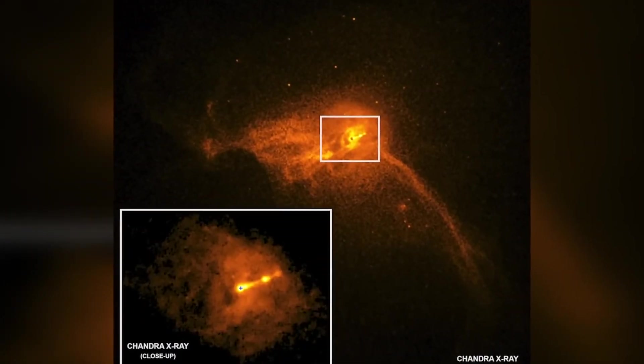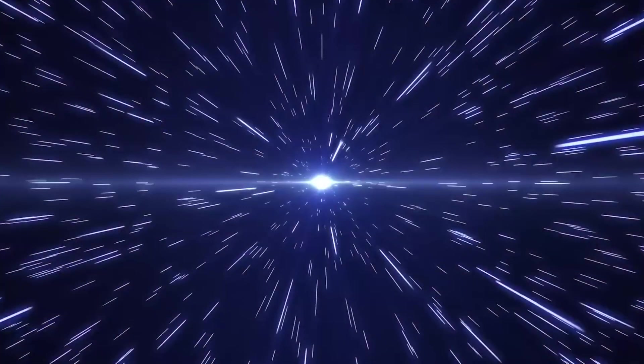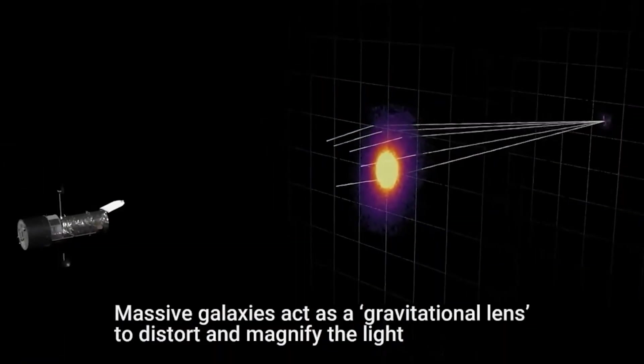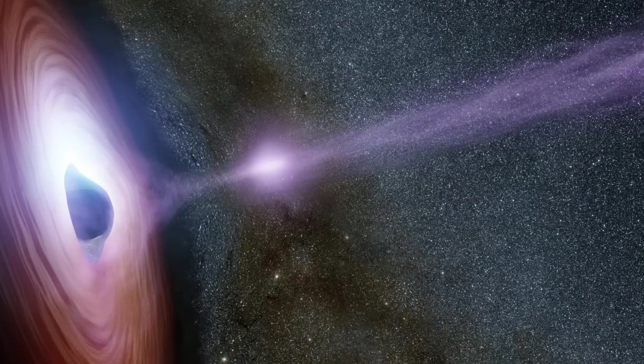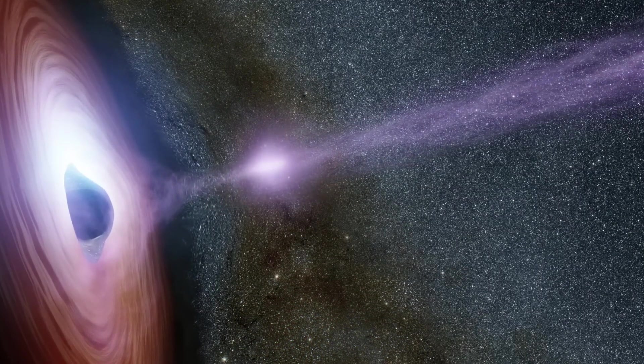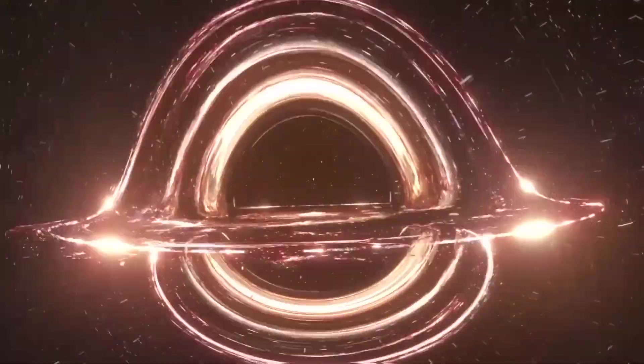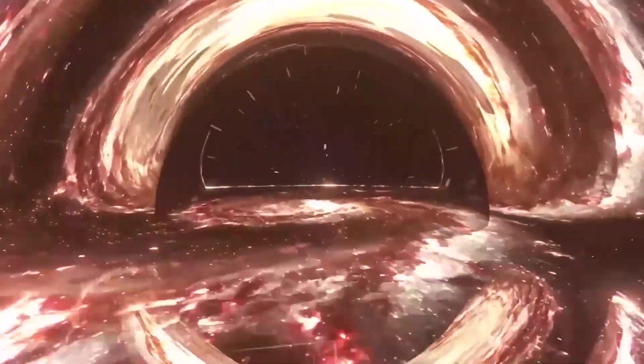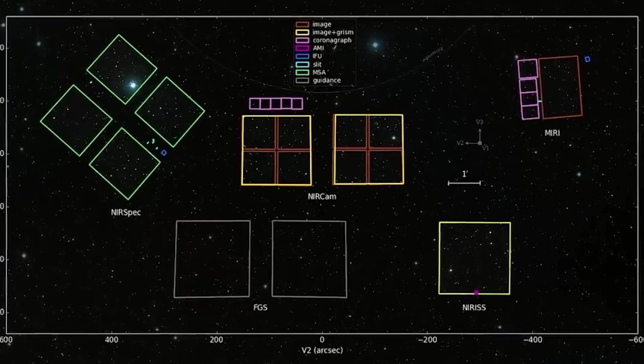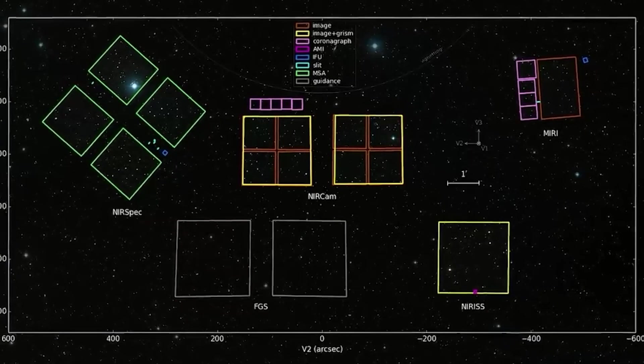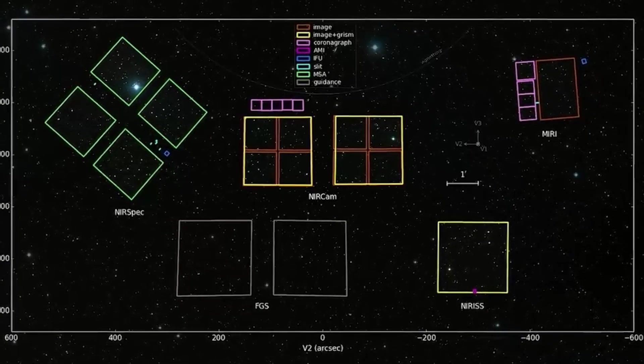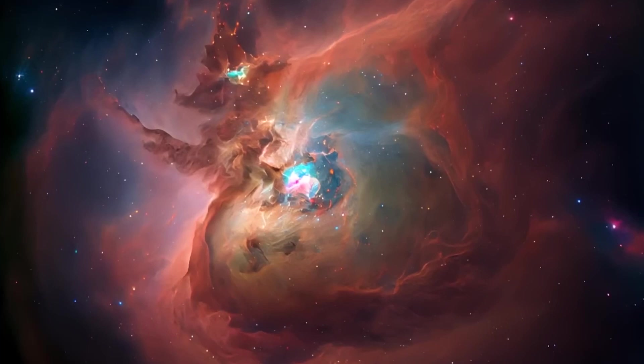Black holes are far from being holes or empty spaces. Instead, they represent a massive amount of matter packed into an extremely small area. Imagine a star that is ten times more massive than the Sun, compressed into a sphere about the size of New York City. This is how a black hole forms, creating a gravitational field so strong that nothing, not even light, can escape.